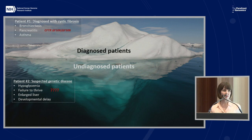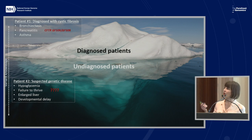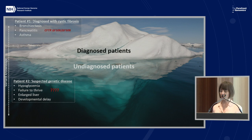He was actually later enrolled into the Undiagnosed Disease Network, at which point he received a whole exome sequence. That too didn't turn up any known pathogenic variants, though it did provide a number of interesting candidate variants that may underlie his disease state. This patient exemplifies that it's really variant knowledge that's limiting the diagnosis of this individual. That's true for a portion of people who have Mendelian disease who are not diagnosed — we don't know enough about rare human genetic variants and their phenotypic implications to really apply them to patients.